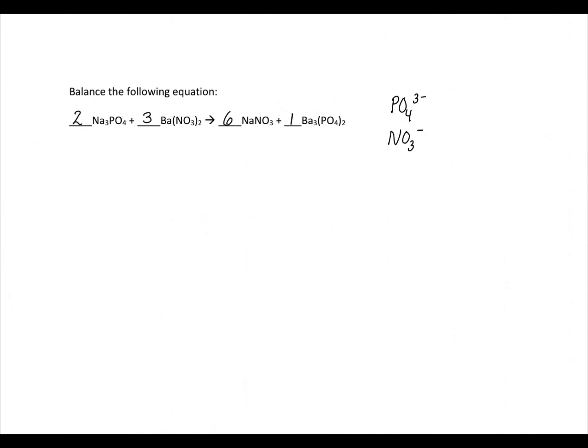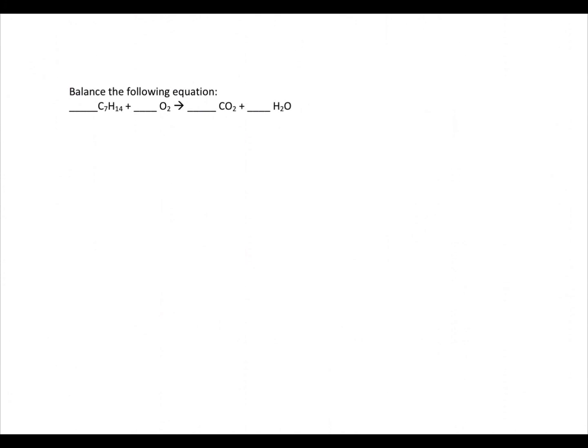You can do a chart as shown in the first two questions to check your work. For our final problem, we are doing a combustion reaction, and we start similarly by giving the compound with the highest number of atoms a coefficient of one. We begin by balancing carbon — we have seven atoms of carbon in our reactants, so we multiply carbon dioxide by seven to have seven atoms of carbon in the products. We have 14 atoms of hydrogen in the reactants and two in the products, so we multiply water by seven to get 14 in the products.